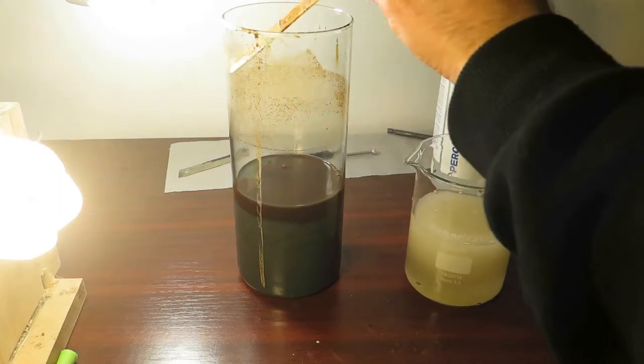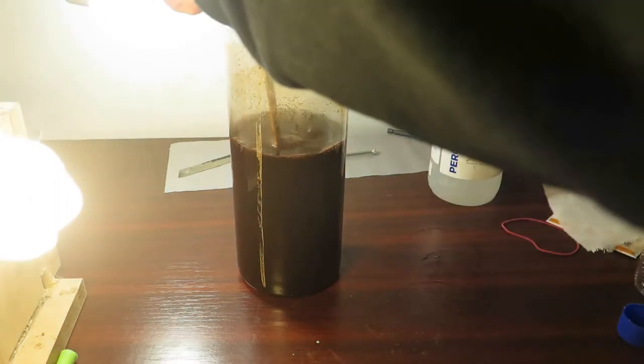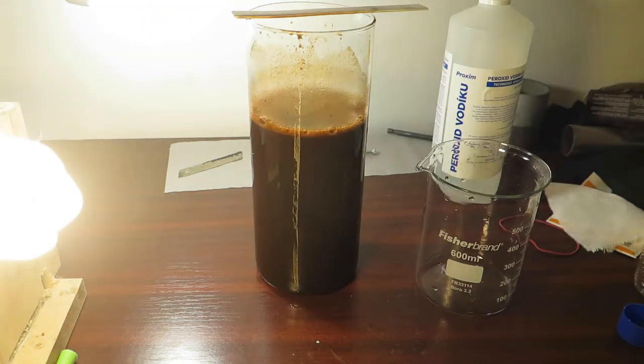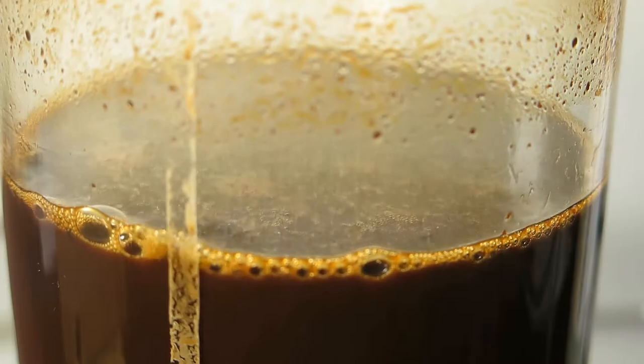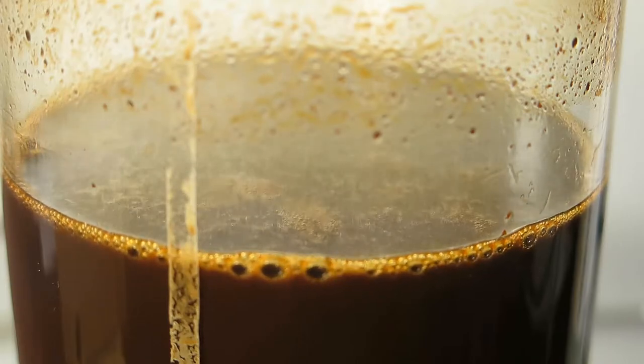And what we are doing here is that we are oxidizing iron-2-hydroxide to iron-3-hydroxide, or iron-3-oxyhydroxide, or what it is. And the chromium-2-hydroxide to chromium at oxidation state 6, so it forms sodium chromate. Iron will remain insoluble, so it's easy to separate it from chromium by simple filtration.